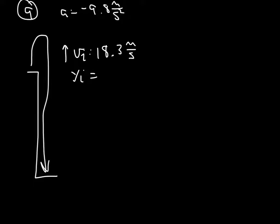Our y initial is 18 meters. Our final position is 0 meters. That means it leaves the top of the building and it goes down to the ground.